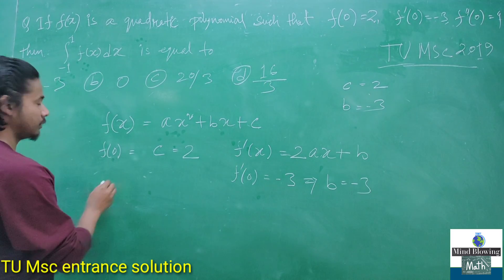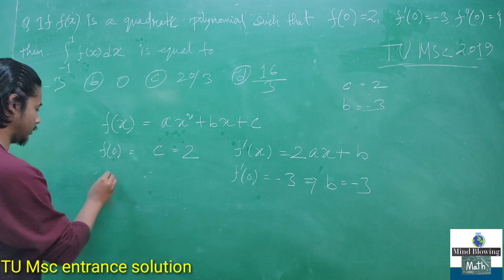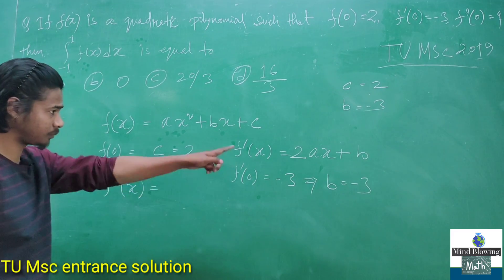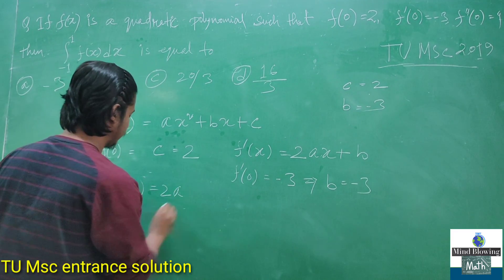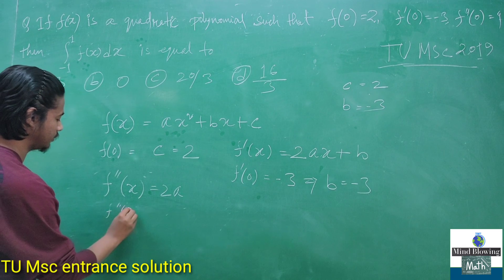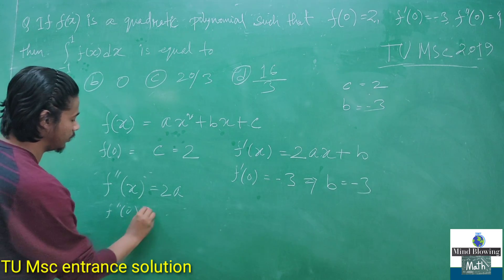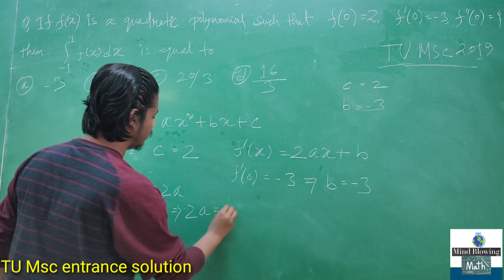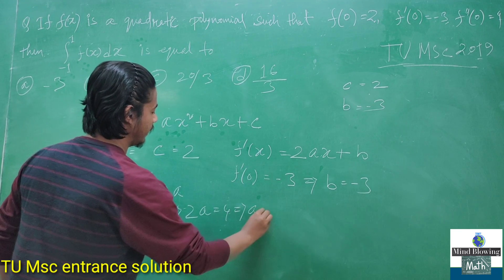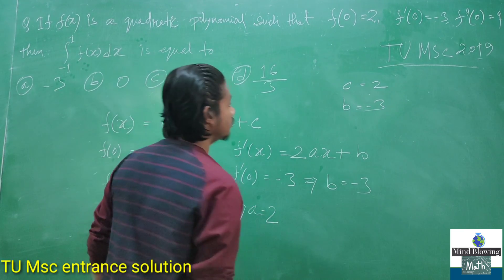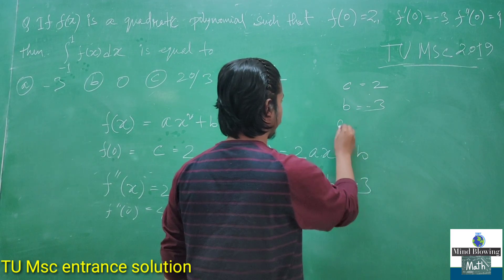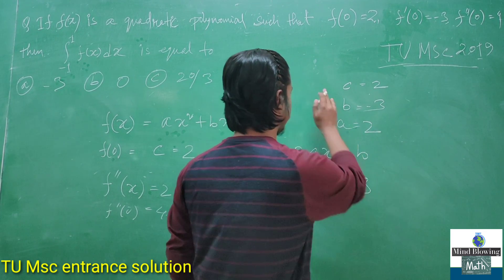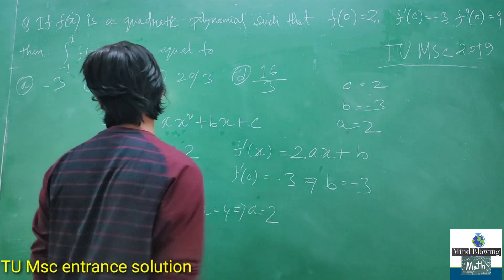From the third condition, we first find f''(x), which is 2a. Given f''(0) = 4, this implies 2a = 4, so a = 2. We now have the values: a = 2, b = -3, and c = 2.